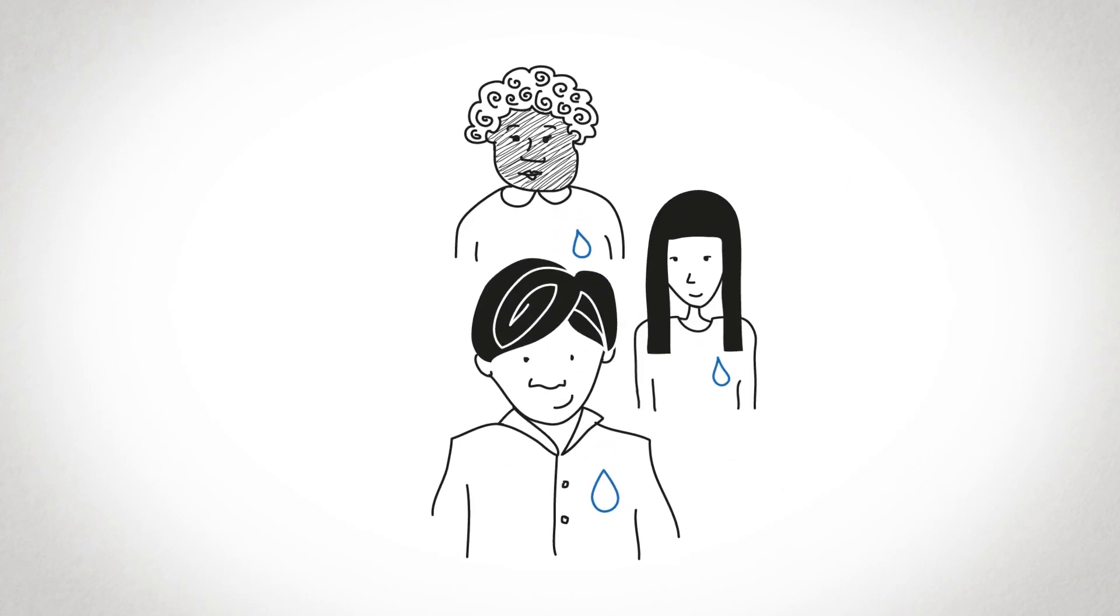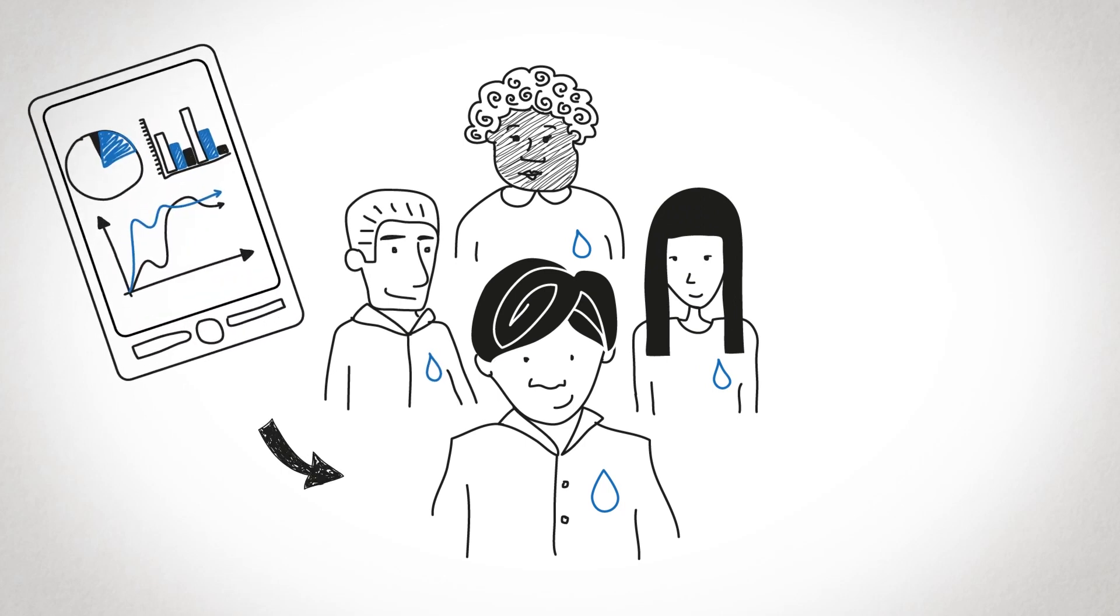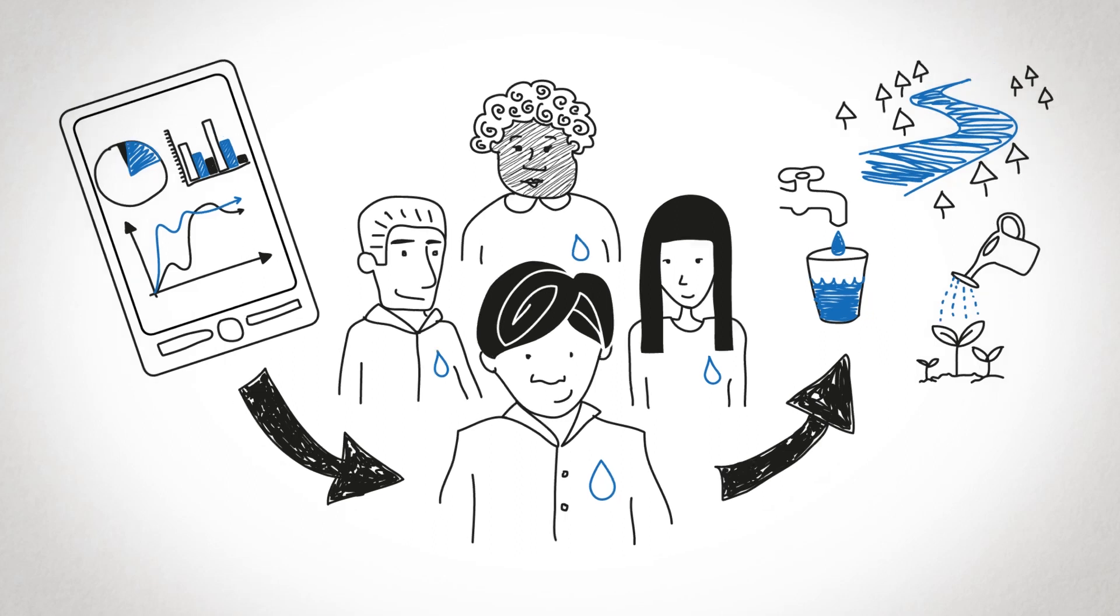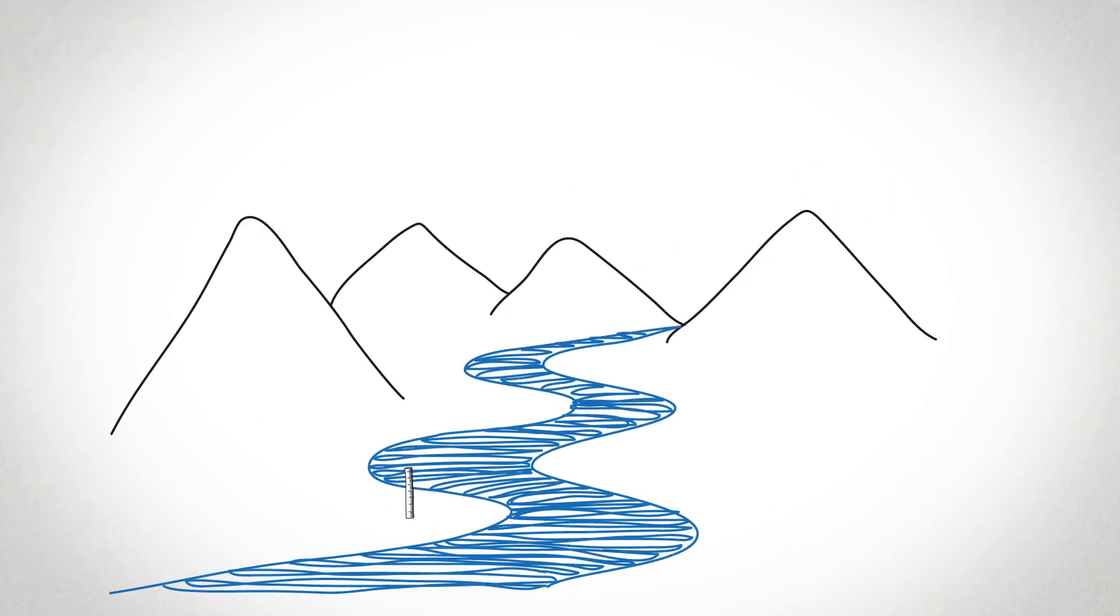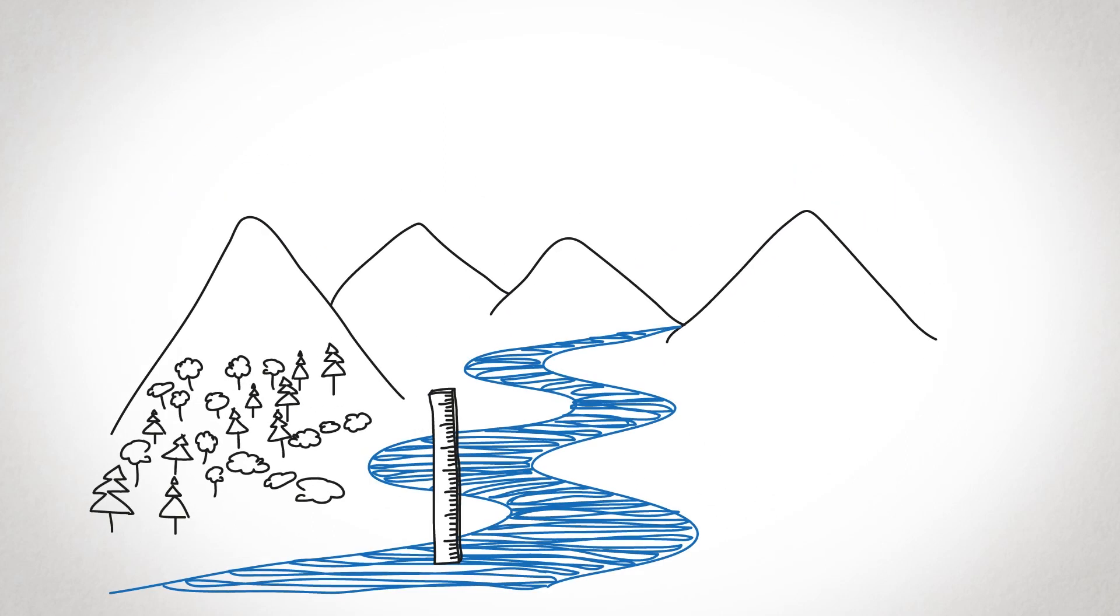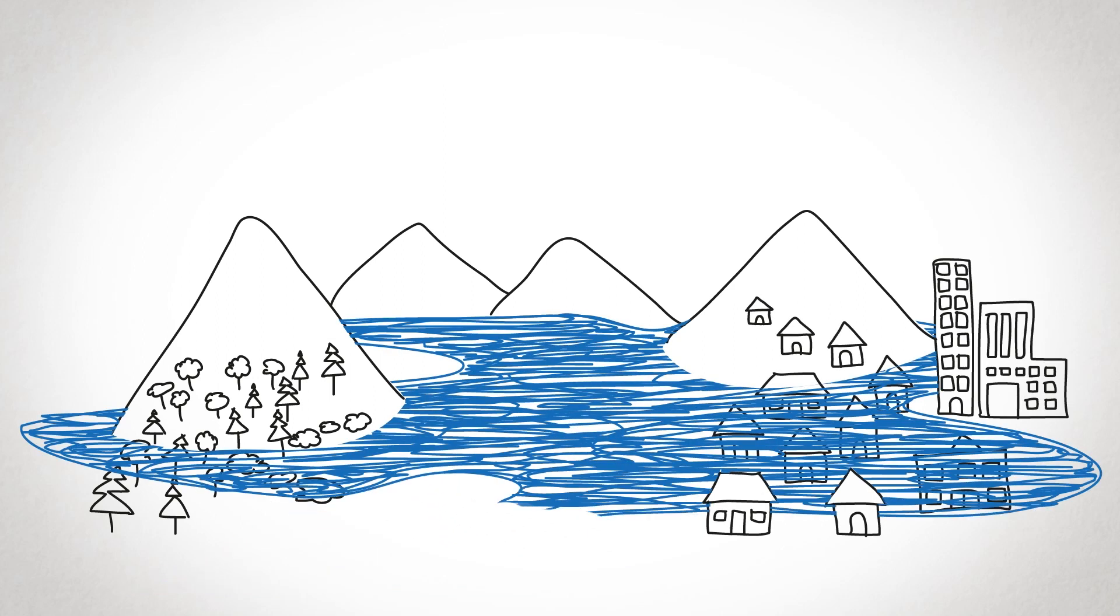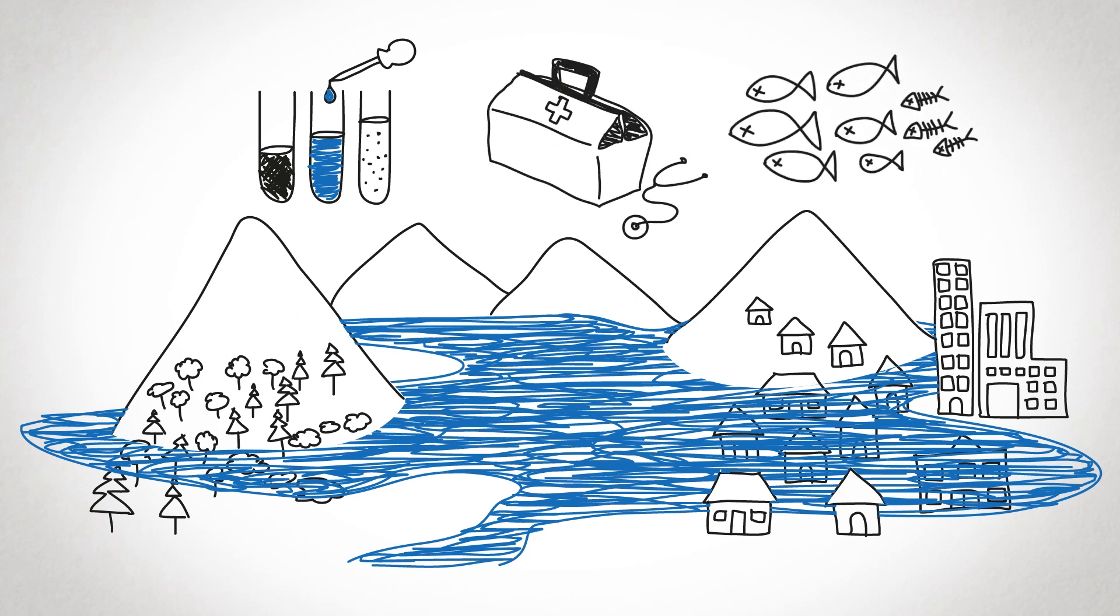Water resource managers around the world require a solid information base to care for our water sustainably. They need to know how much water is available in a given area to ensure supply to all users. They need information about areas prone to flooding to protect the people who live there, and they also need to know about water quality to help avoid risks to human and environmental health.